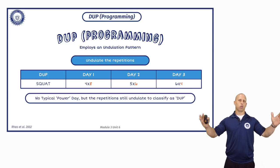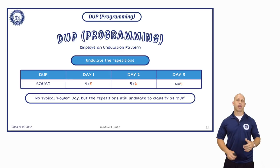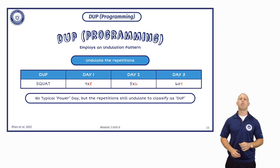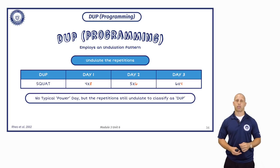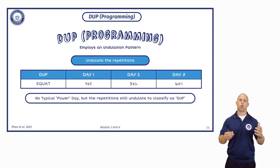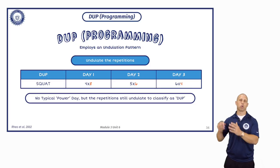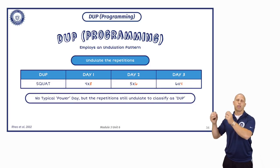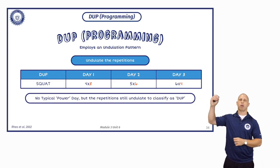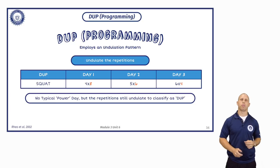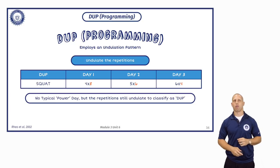We need to distinguish it as programming rather than periodization, because periodization is long-term trends. And if you think about it, periodization actually dictates your programming. If you want to know whether you should do higher or lower sets and reps, you look at where you are in your periodization macrocycle. If you're early in it, your programming is going to be higher reps. If you're later in it, your programming is going to be lower reps.